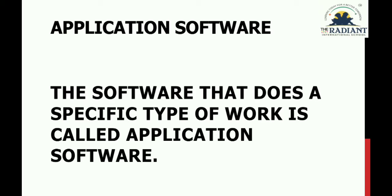The software that does a specific type of work is called application software. For example, if you have a juicer in your house, you can only extract juice of fruits and vegetables with it — this indicates that you can do a specific type of work with one machine.